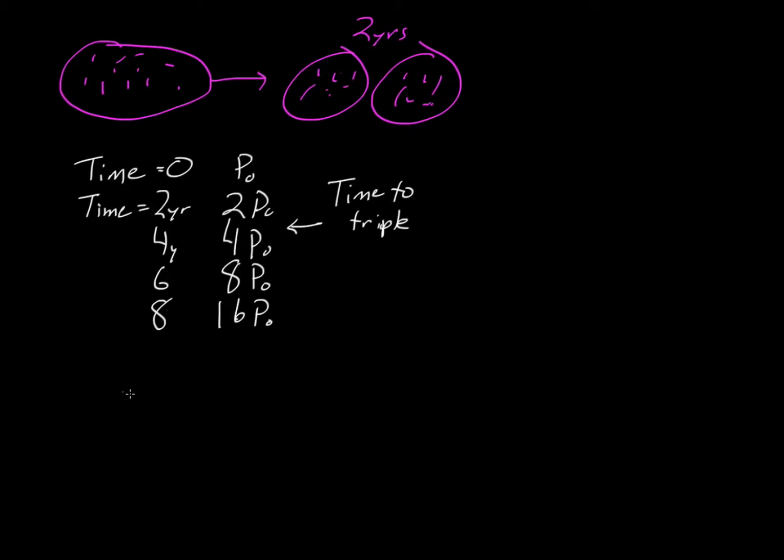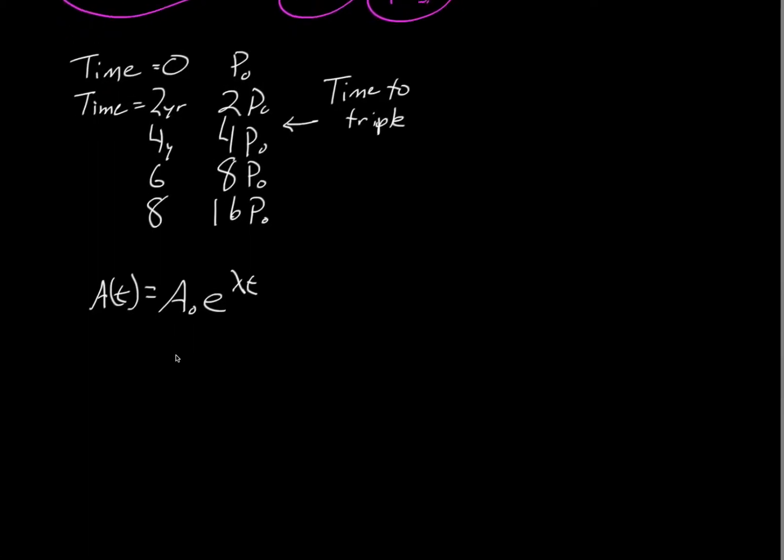The standard form for growth for a logarithm is you'll have a constant as a function of time equal to the initial amount of that constant at time equals zero, denoted by a-naught, times e to the lambda t. Lambda is simply known as your growth constant. That's a number that describes your exponential growth. So how can we determine this? How can we apply this to our problem?